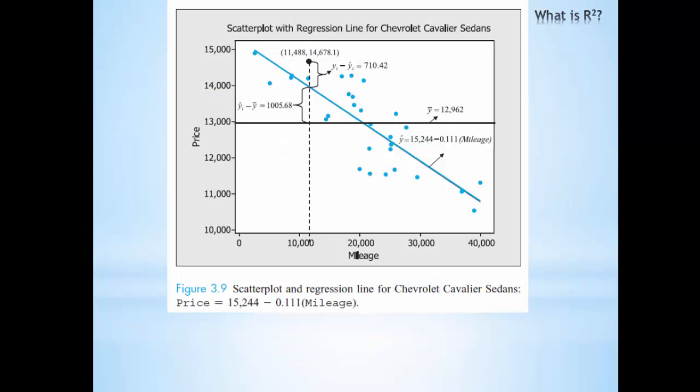So let's talk a little bit about what the R-squared value is actually telling us. Here we have an even smaller subset of the data in order to better see individual points. We have generated a simple linear regression model, which is y-hat equals 15,244 minus .111 mileage.